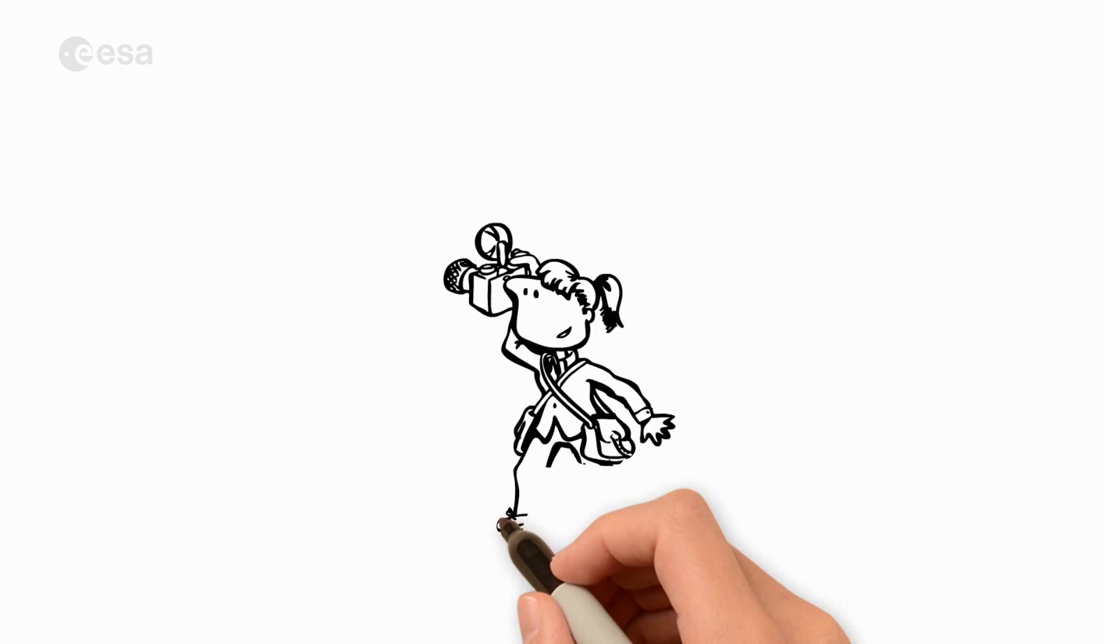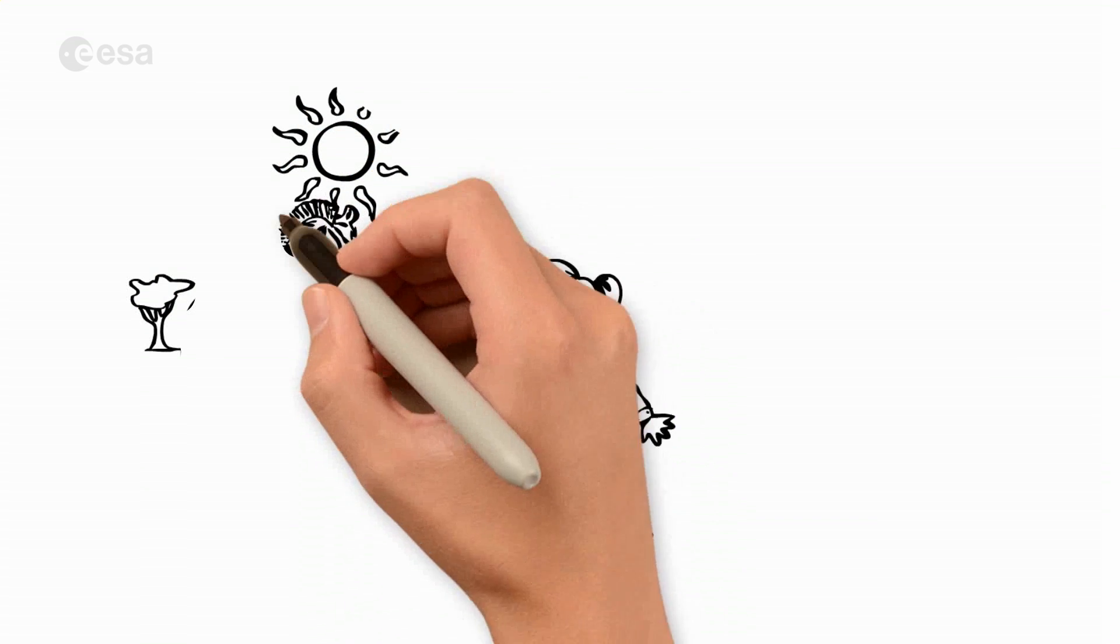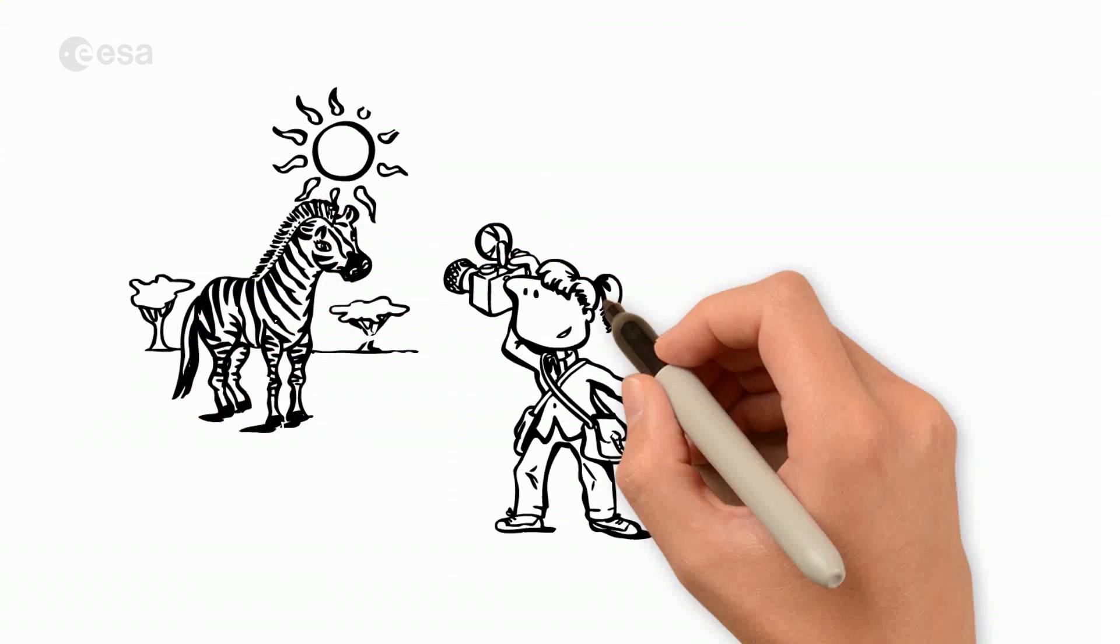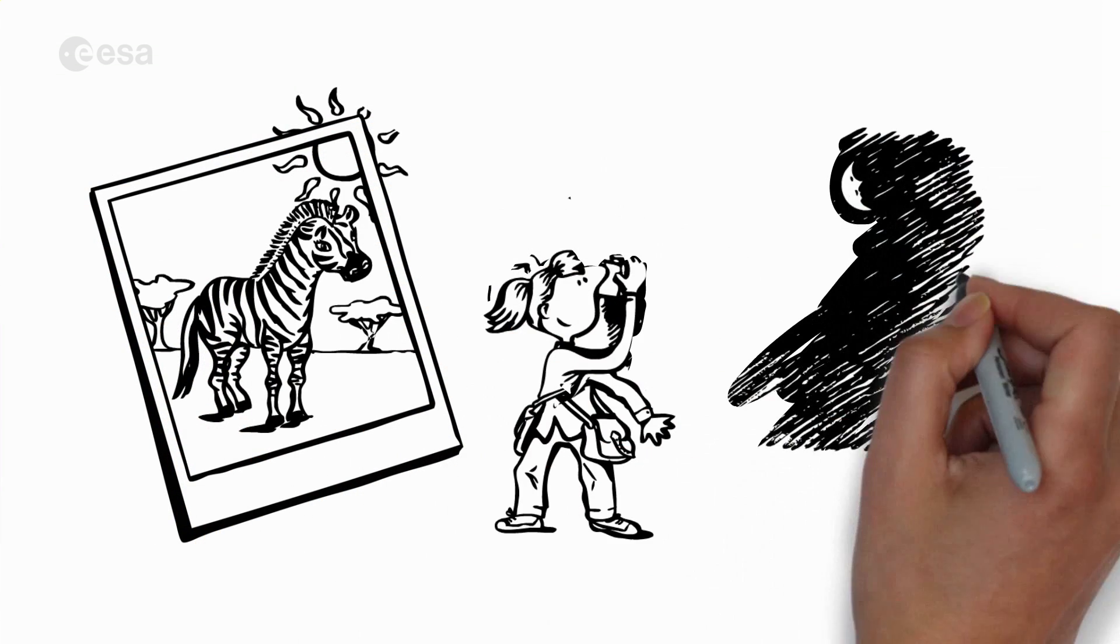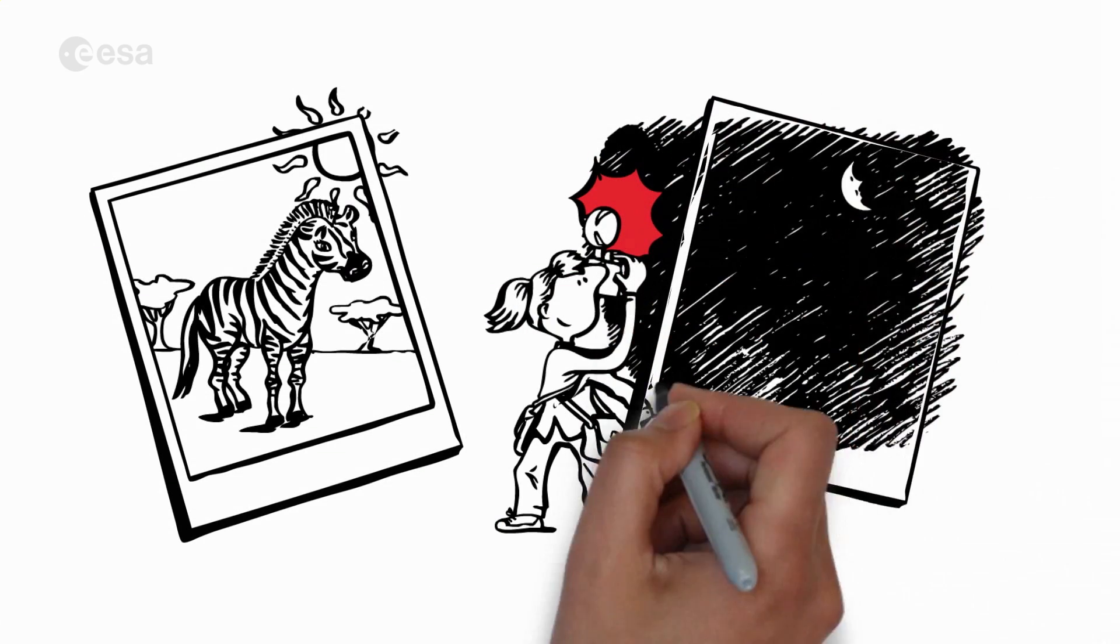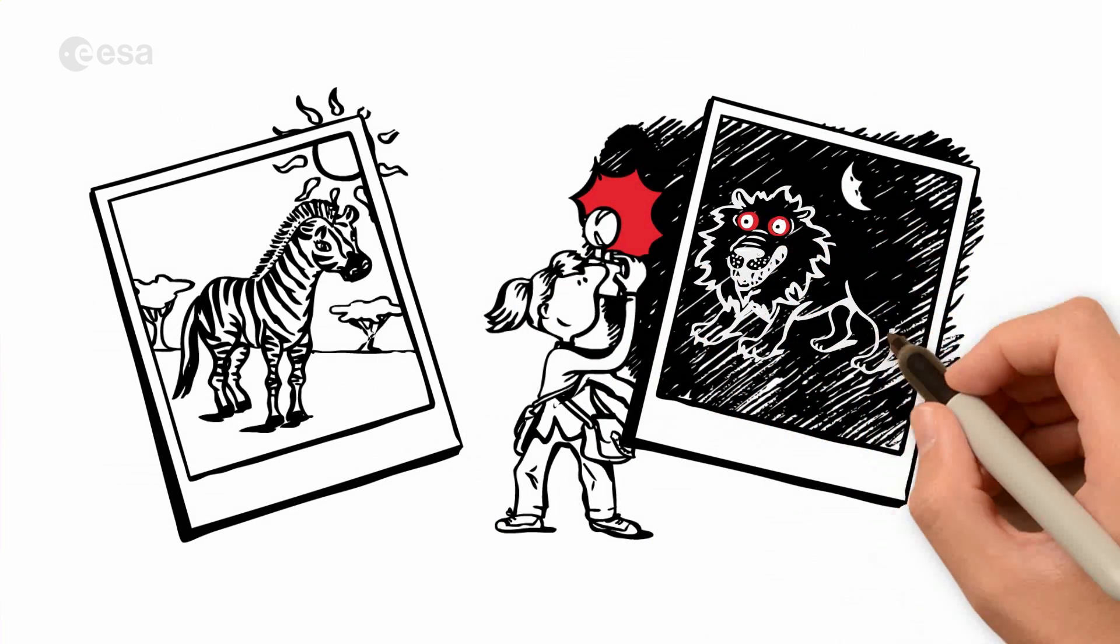Gina is an avid photographer. Whenever the sun is shining brightly, Gina captures the best moments and takes the most perfect pictures. After sunset, Gina brings her own light to illuminate the scene and make obscure things visible.